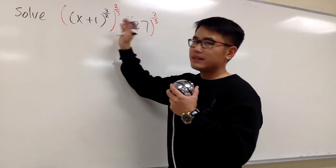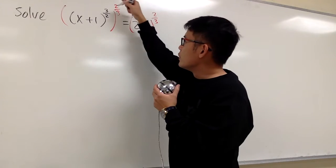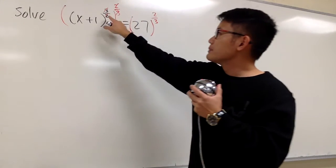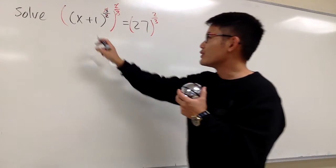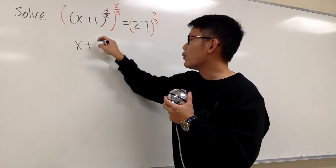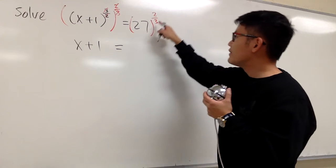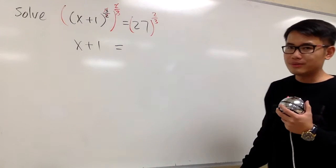Right here on the left-hand side, once again, this 3 and that 2 will cancel, this 2 and that 2 will cancel, because this power and that power have to be multiplied in. And we will just have the x plus 1 right here. And this is going to be 27 to the 2 over 3 power.